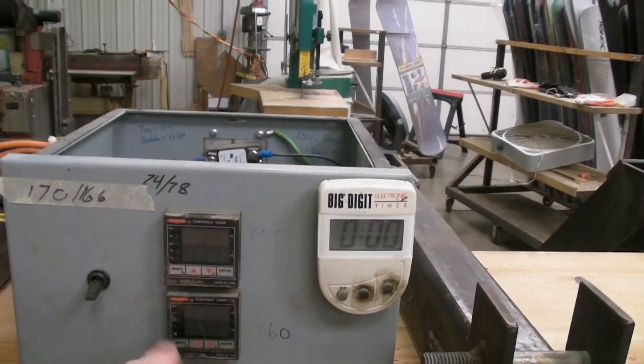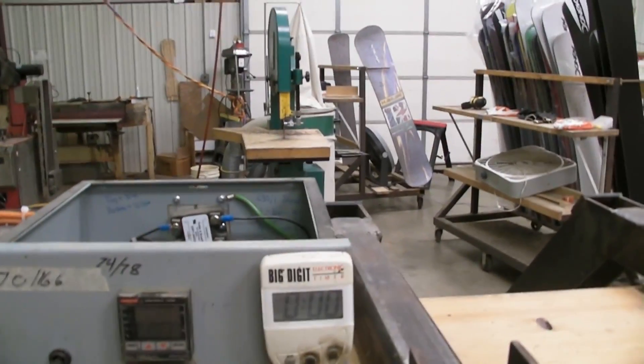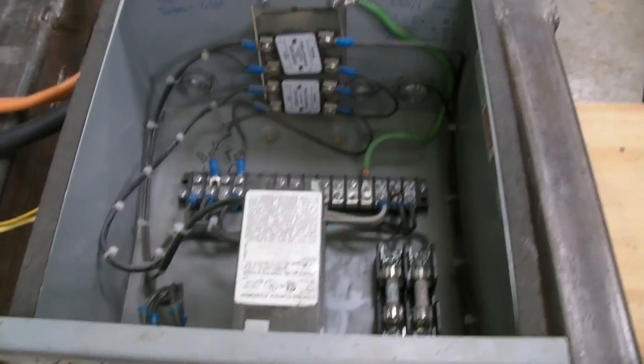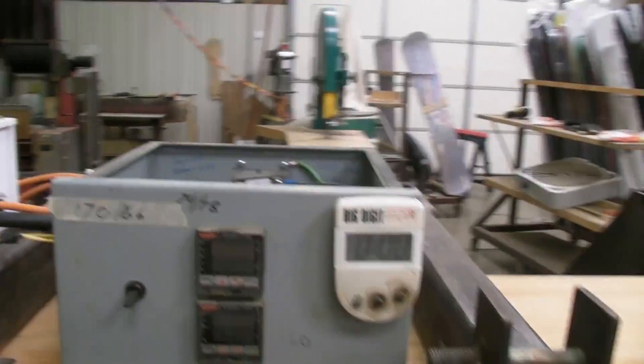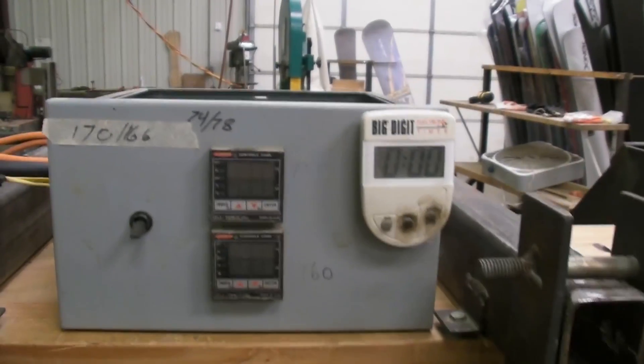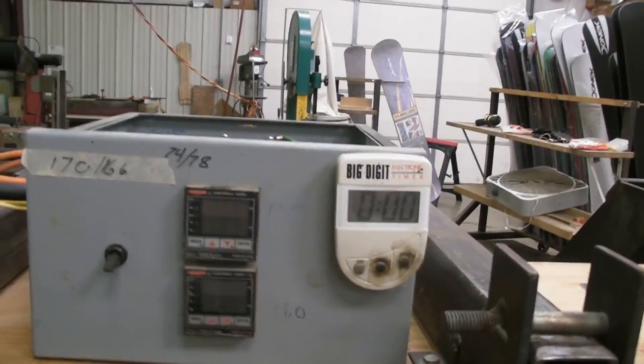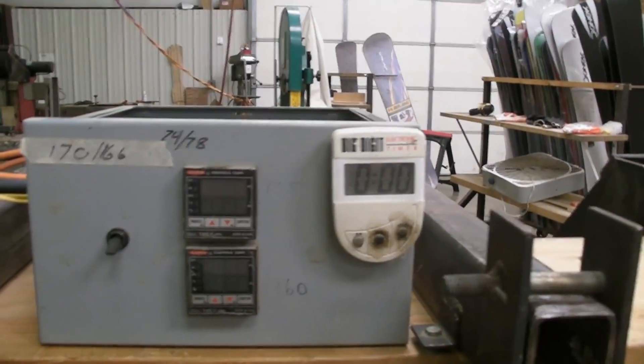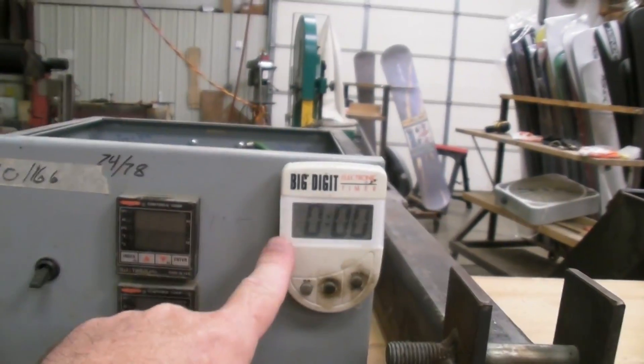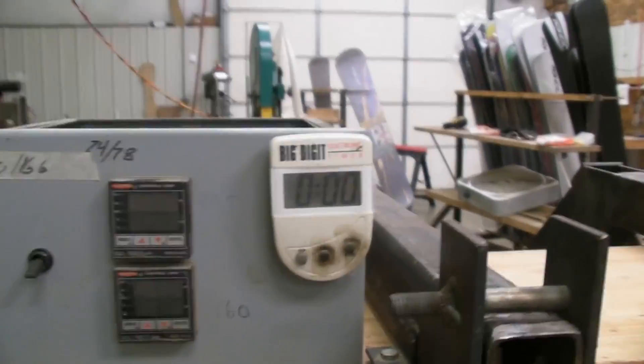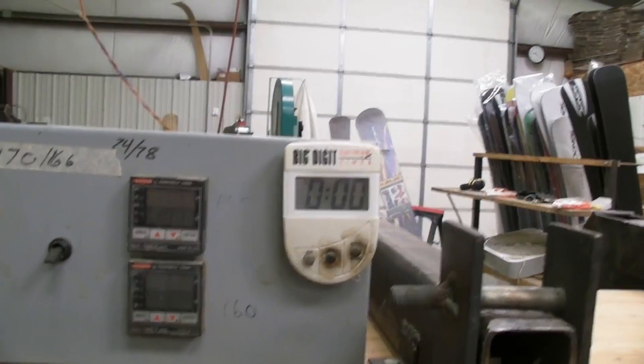We've got two Love 1600 controllers here and some electronics inside the box. And all of that worked together to control the temperature of the top and bottom layers in the press. We also have a little kitchen timer here on the side that was used to time the cycle.